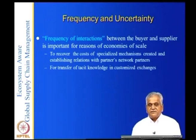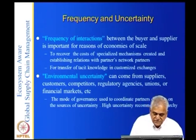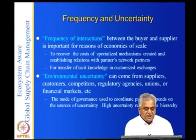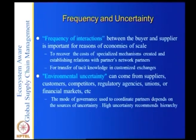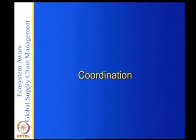Frequency and uncertainty also matter. The frequency of interactions between buyer and supplier creates economies of scale. If it is a one-time transaction for one year, it may not be worth the cost of specialized mechanisms or established partner network relations. A trader can get more frequency because he does it for several people and countries, whereas a manufacturer may only get three or four orders per season. Environmental uncertainty can come from suppliers, customers, competitors, regulatory agencies, and financial markets. The mode of governance used to coordinate partners depends on sources of uncertainty.